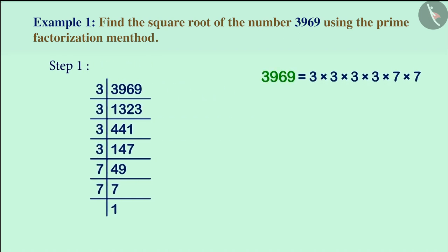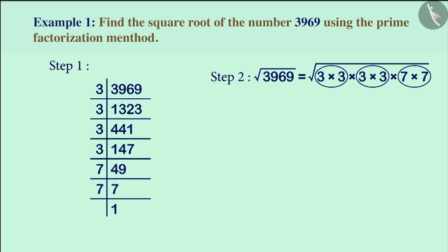Now, we will express the number 3969 as the product of its prime factors. After this, we will group the prime factors into pairs in this way.